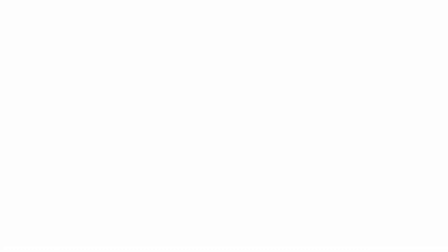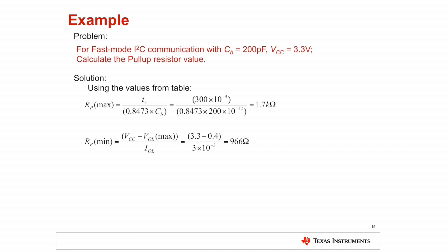For a better understanding, let's look at an example. For fast mode I2C communication with CB equals 200 pF and VCC equals 3.3V, calculate the pull-up resistor value. Using the values from the table, the RP max value can be calculated as shown.